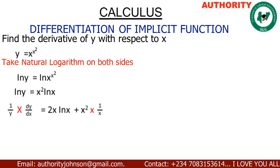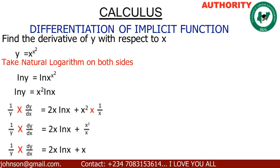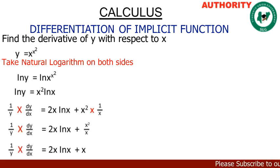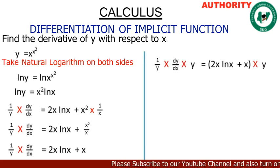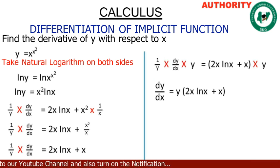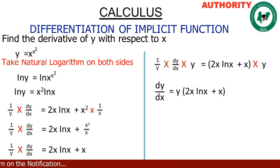Simplifying x squared divided by x gives us x. So 1/y times dy/dx equals 2x ln x plus x. Now we make dy/dx the subject by multiplying both sides by y, giving us dy/dx equals y times the bracket 2x ln x plus x.